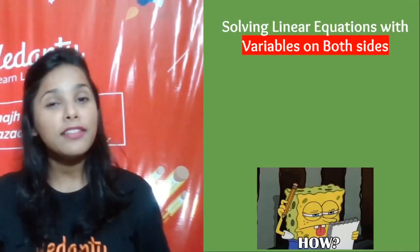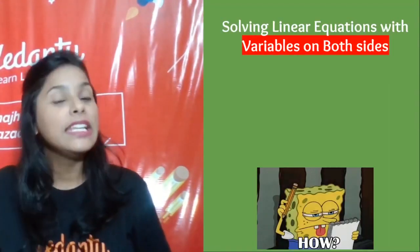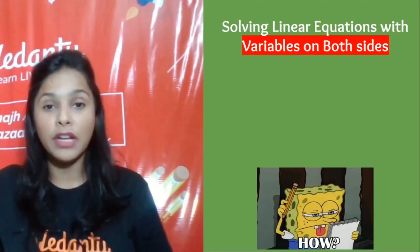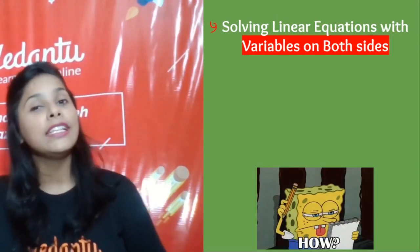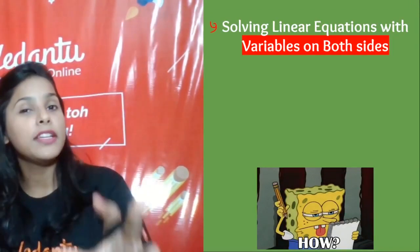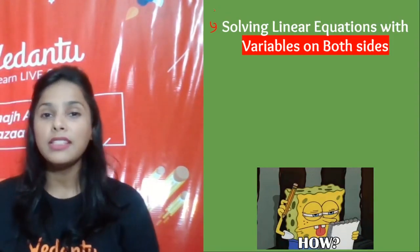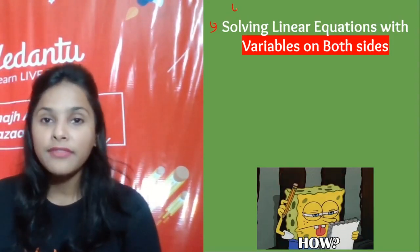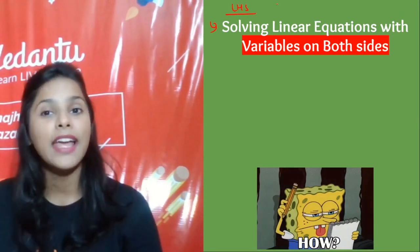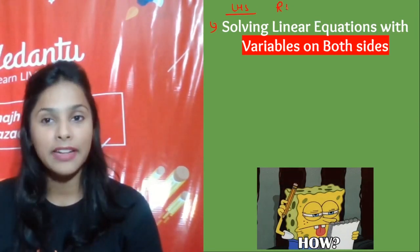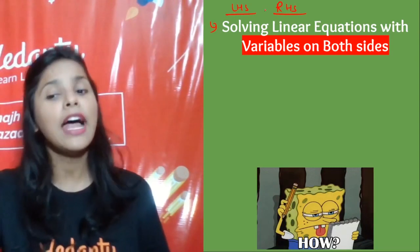We are going to boom another very very important topic for the chapter Linear Equations in One Variable — that is, how to solve linear equations when you have a variable on both sides of the equation, meaning you have the variable on LHS as well as RHS.